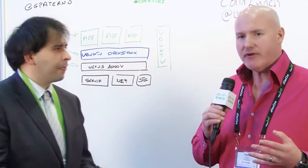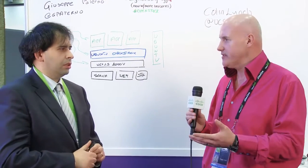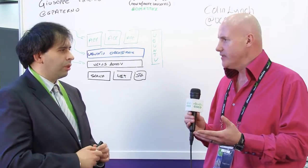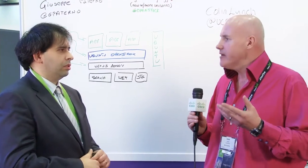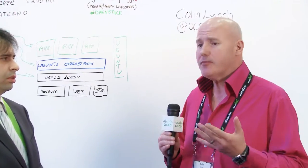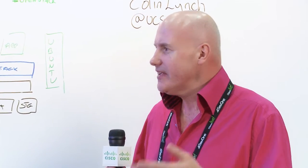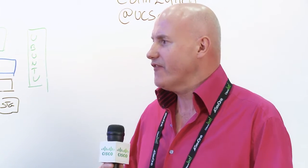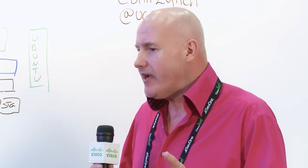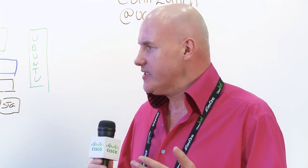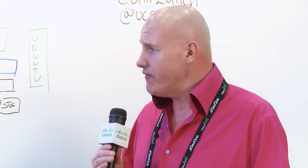So up until now, we've only had Open vSwitch as an option for the virtual switch within OpenStack, correct? Right. I'm not a big OVS guy, but even I know that up until now, OVS has had barriers to adoption. It maybe hasn't had the rich features required by a cloud platform. Can you explain what advantages Nexus 1000V is bringing to OpenStack that we didn't have with OVS?